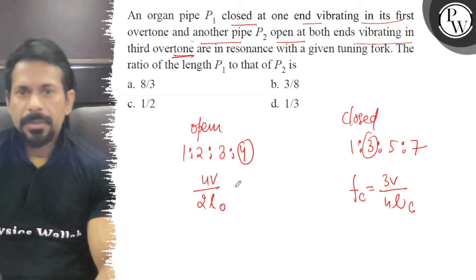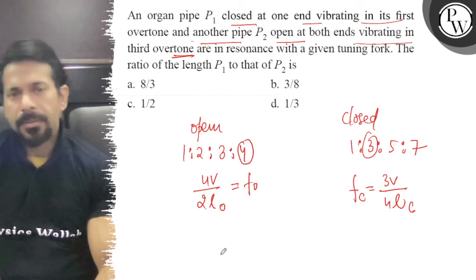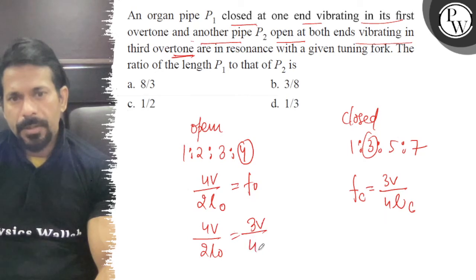So this is 4V by 2L open and here closed. That is equal to f_open. So 4V upon 2L open is equal to 3V upon 4L closed.